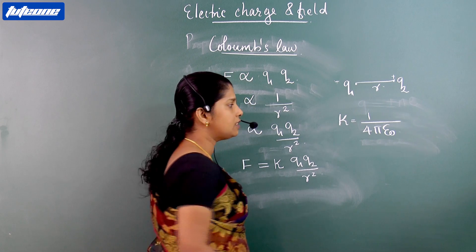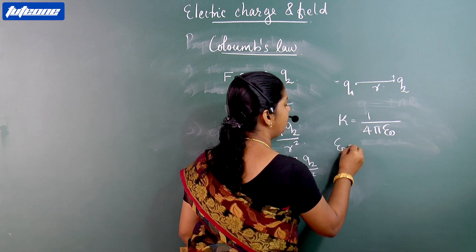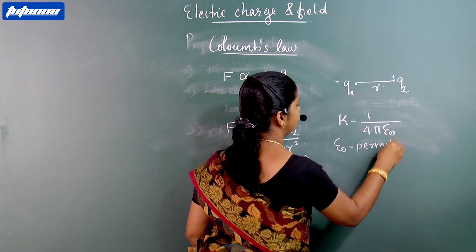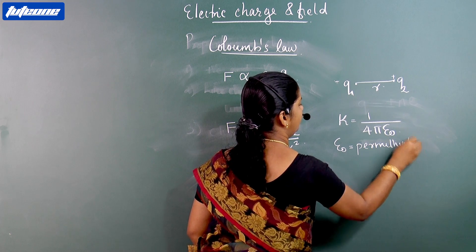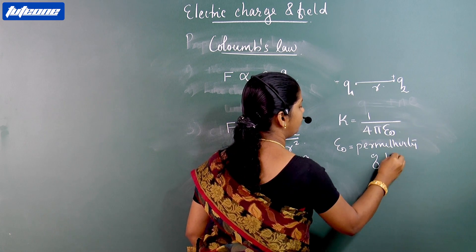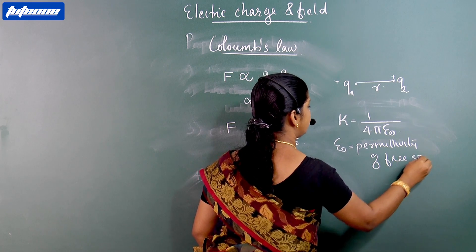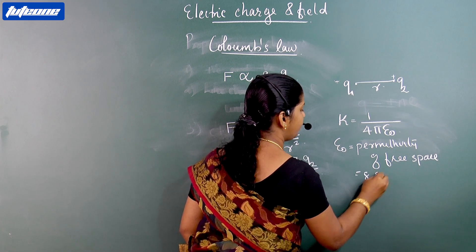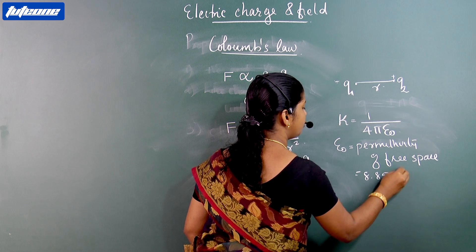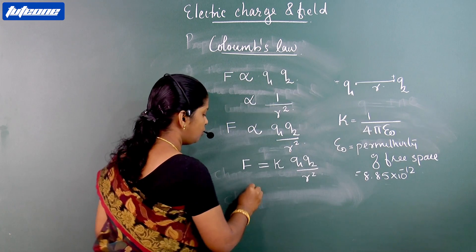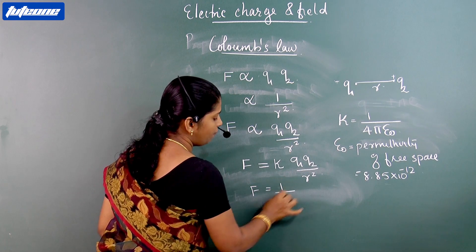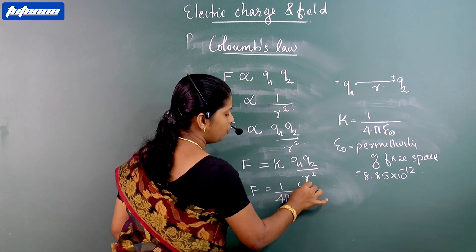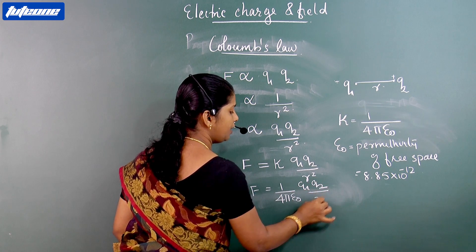Here, ε₀ is a constant known as the permittivity of free space. Its value is 8.85 × 10⁻¹². So F is equal to (1 / 4π·ε₀) · Q1·Q2 / R².